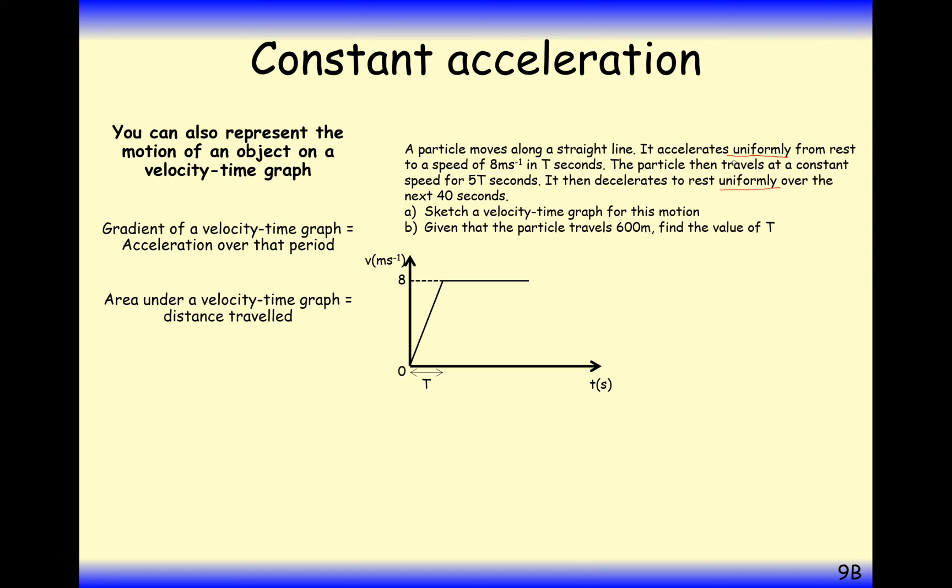The next bunch of time here is traveling at a constant speed, so that means flat line for 5t seconds. We've got a further 5t seconds on this. And then it says decelerates uniformly over the next 40 seconds. So this part here on the graph is going to be at 40 seconds down to rest.